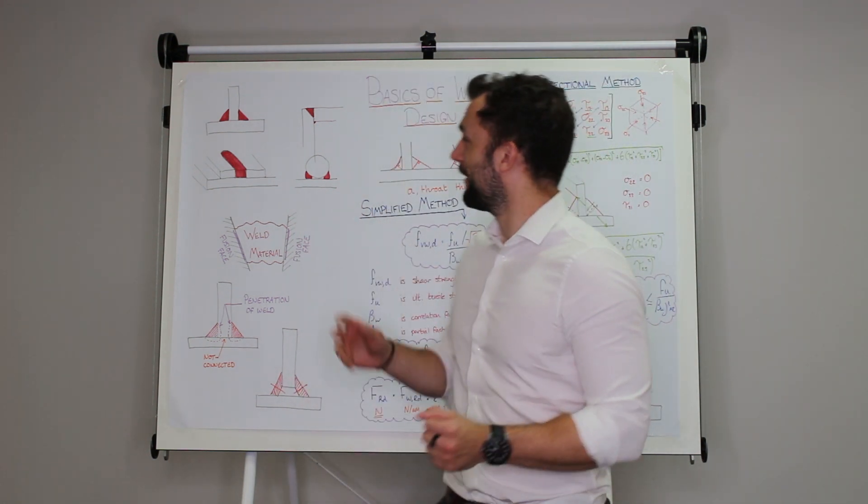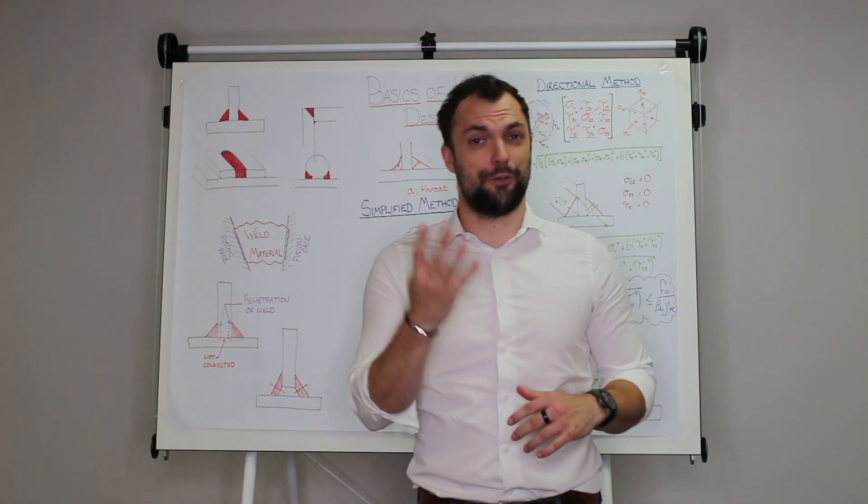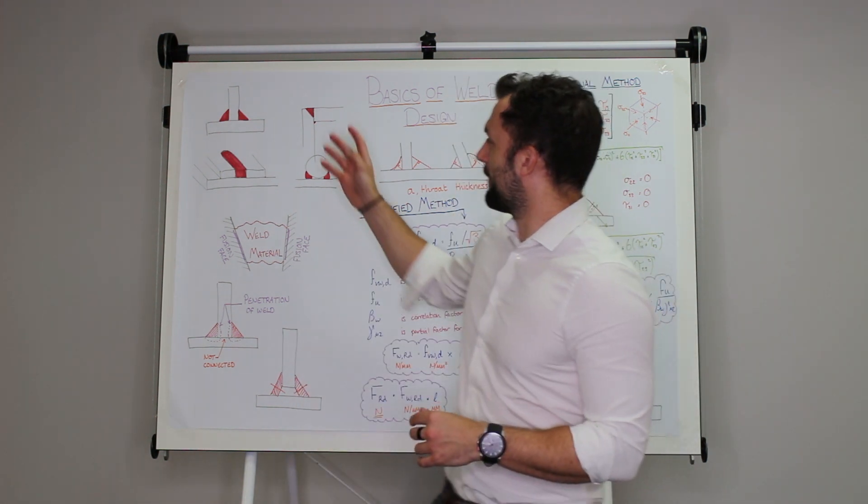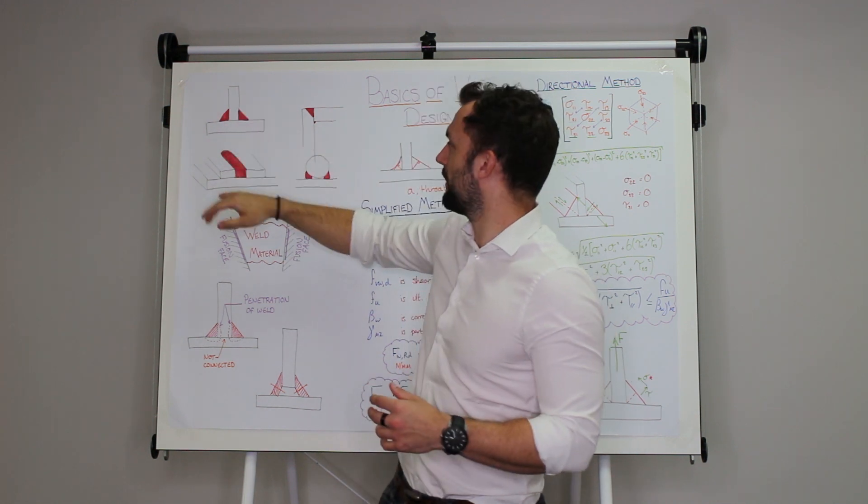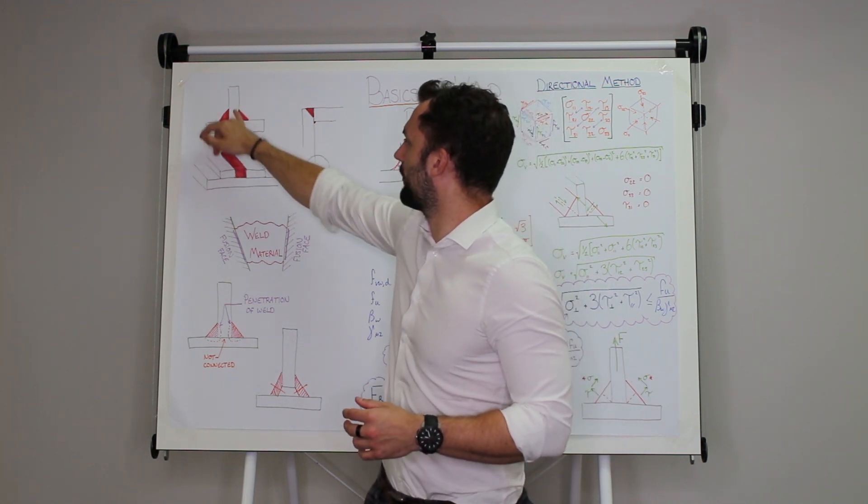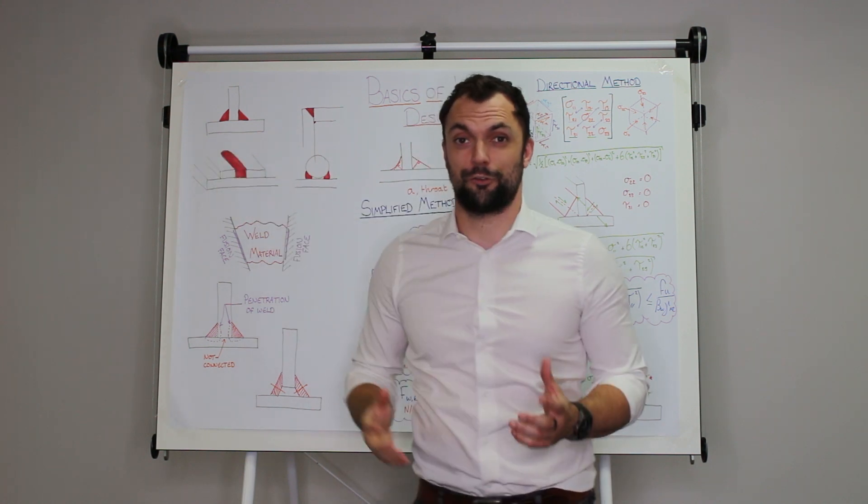If you open up your Eurocodes you'll see that it pretty much recognizes four categories of weld. There's a fillet weld where you basically have two connections at right angle and there is a fillet that fills in the space between those two connected parts.